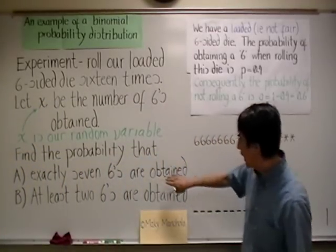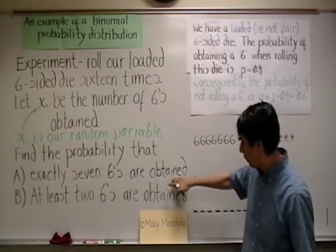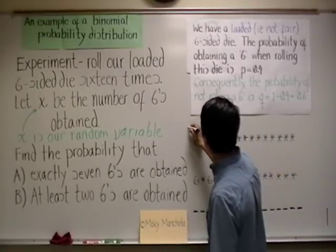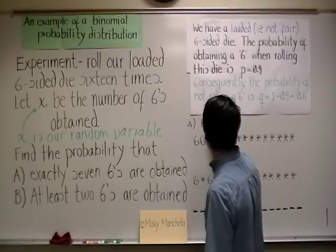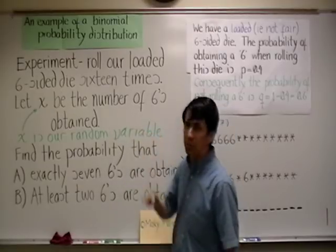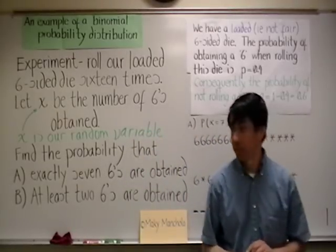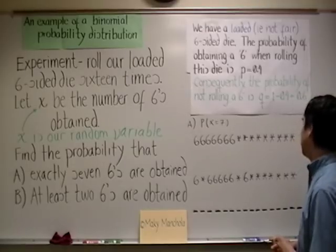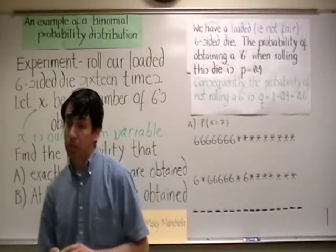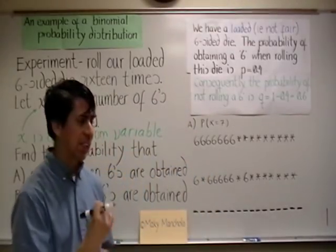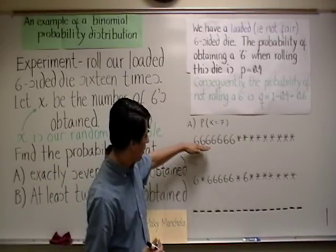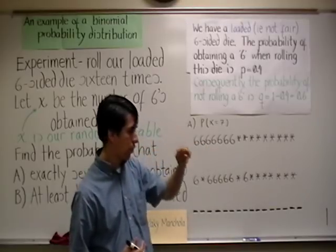If we translate part A, what we are looking for is the probability that our random variable equals seven. In other words, the number of sixes is seven. That's what we want. So, here is what we are going to have to do. We are going to have to consider the number of cases that we get of getting exactly seven sixes. Here on this board, I have a couple of them.